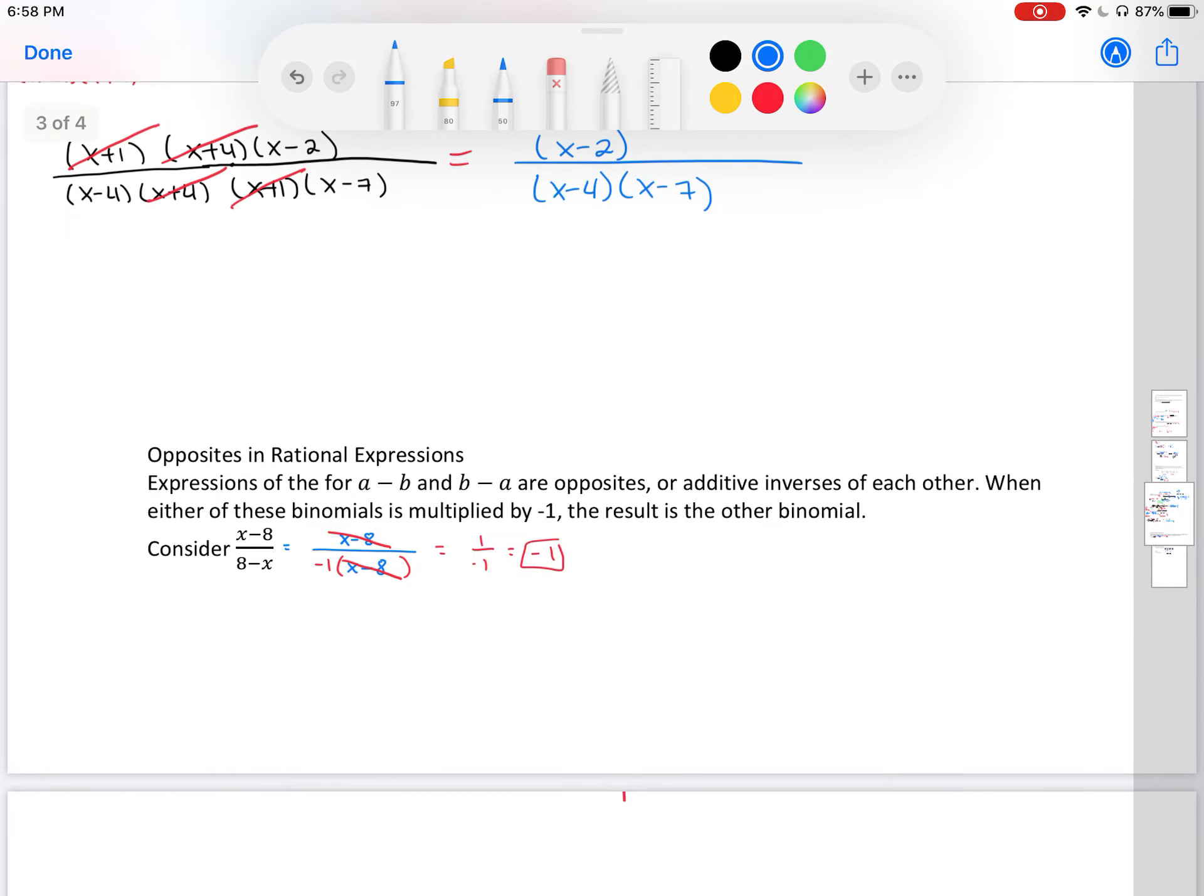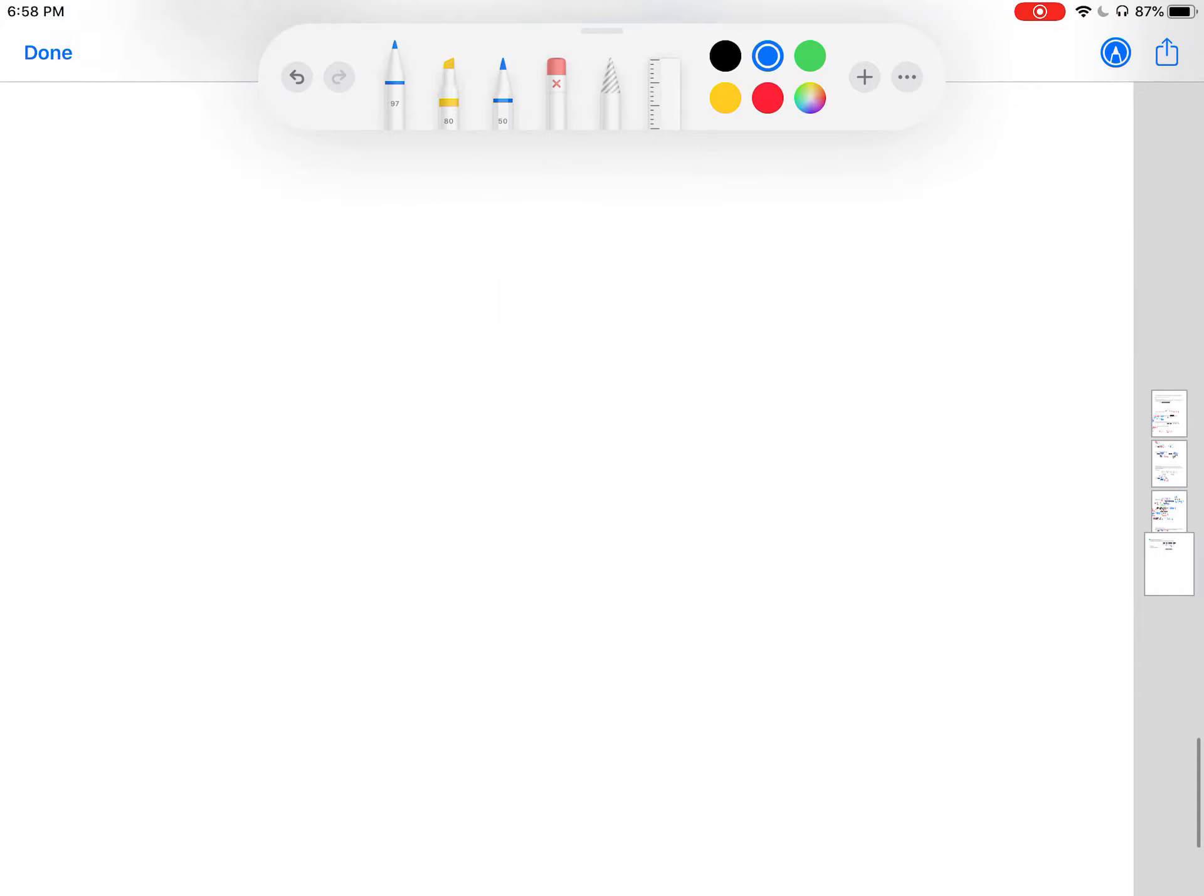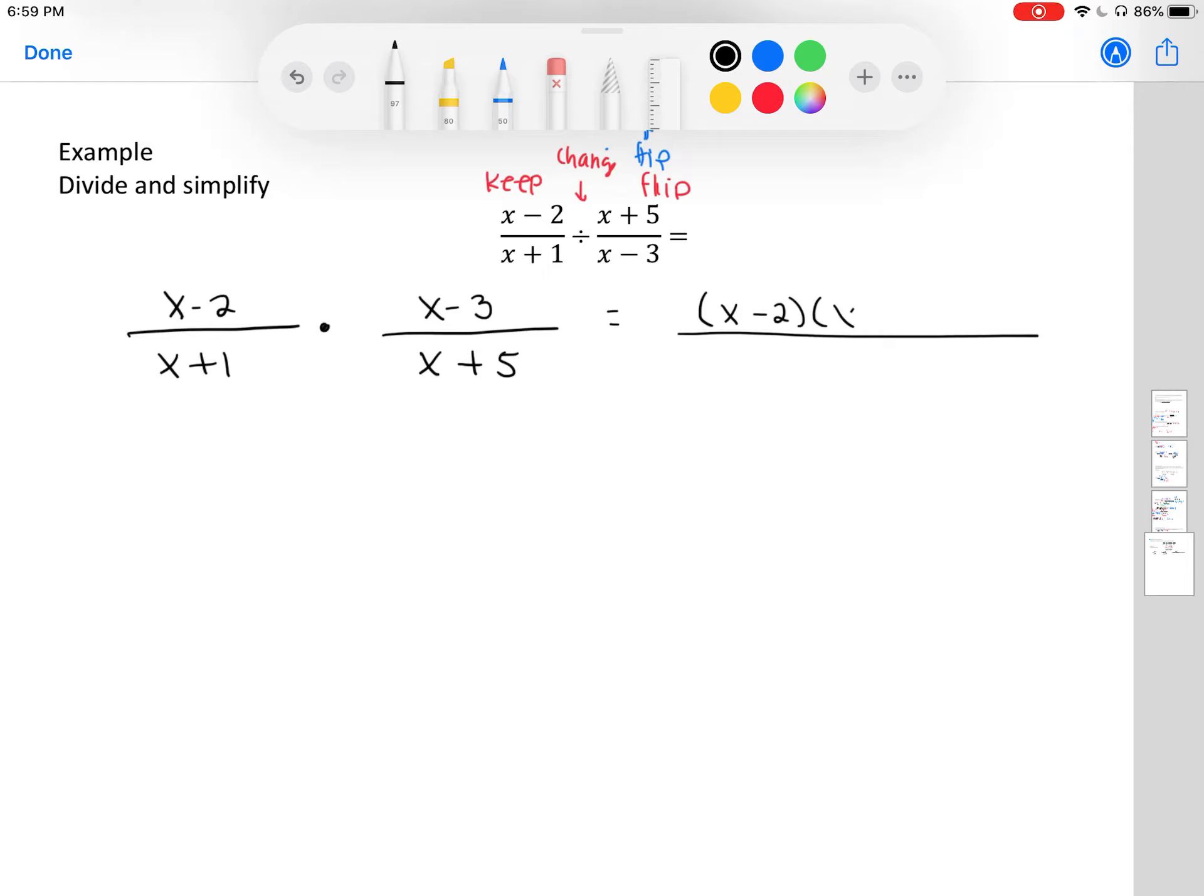We already talked about opposites in rational expressions and dividing rational expressions. Keep change flip. That's how you divide fractions. You multiply across. So our answer is x minus 2 times x minus 3 over x plus 1 times x plus 5. And can we cancel anything out? Nope. That's our final answer.